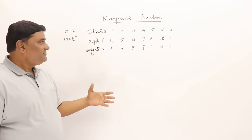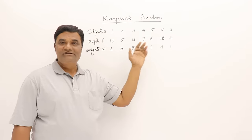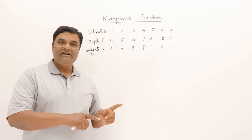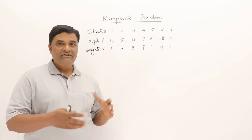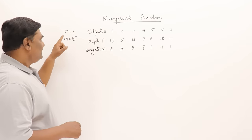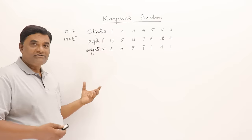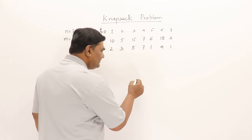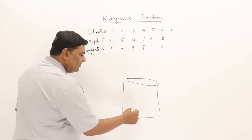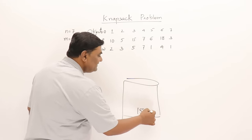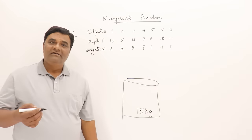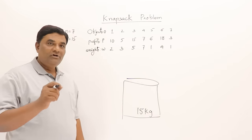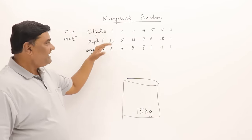Every object has some profit associated with it and every object has some weight. There is a bag called a knapsack whose capacity is 15 kg. These are seven objects and the bag capacity is 15 kg. Now what we have to do is fill this bag with these objects.